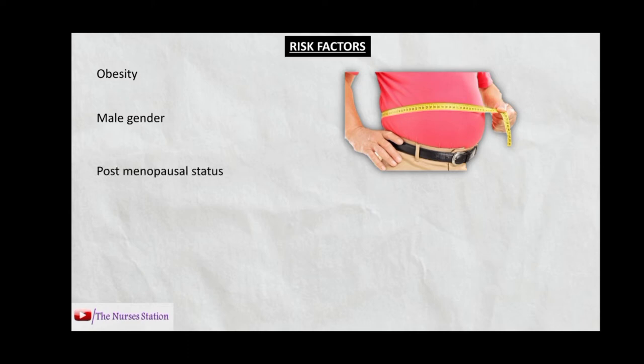Post-menopausal status is another risk factor. The higher levels of estrogen and progesterone protect women prior to the onset of menopause — these hormones maintain the airway muscle tone and keep it from collapsing. But with menopause, the levels of these hormones drop to their lowest values and the incidence of sleep apnea climbs.